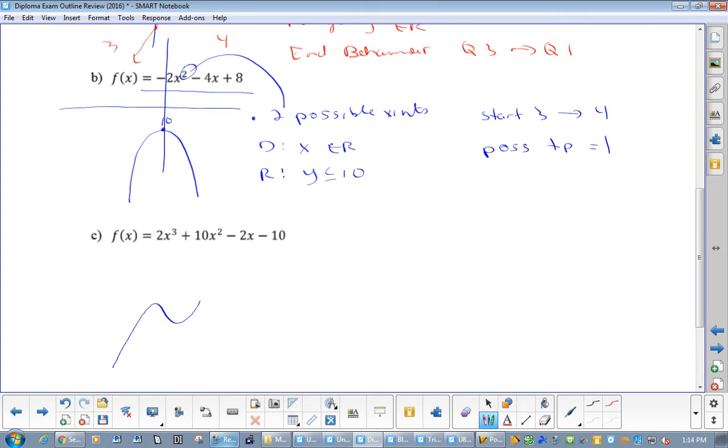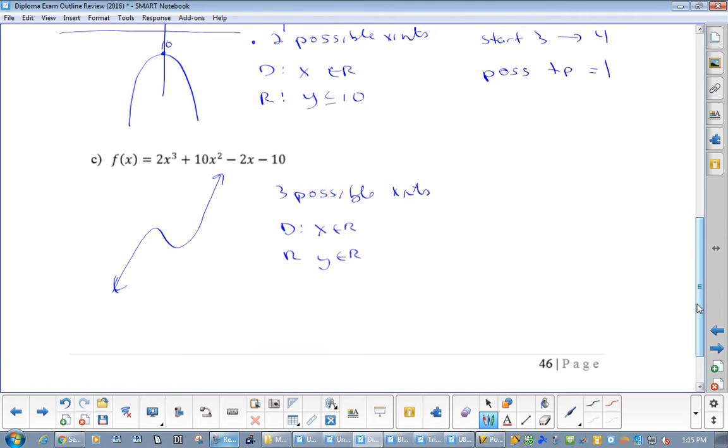This one goes like this. I mean, you'll graph these in your graphing calculator. How many possible x-intercepts? Three possible x-intercepts. Domain: x in the reals. Range: y's in the reals. Now what is the y-intercept? You can just by looking at it - very good, negative 10, because when you put an x of zero in there, it gets rid of this, this, and this. End behavior: Q3 to Q1. Possible turning points: two possible turning points. So they're going to ask you something like that.